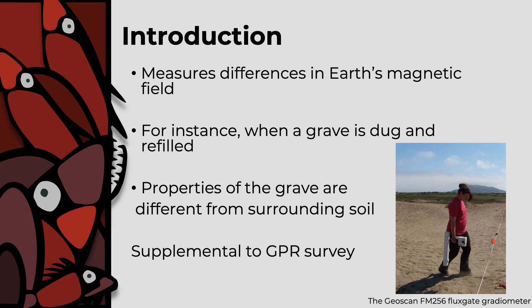These differences are tiny and need specialized instruments to detect them. Usually the difference is small, so sometimes identifying the grave is impossible and other approaches are needed. Magnetometer survey will therefore, in most cases, be used as a supplemental survey technique to ground penetrating radar to improve confidence in the results.